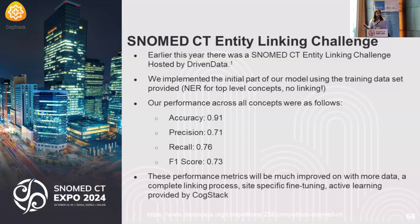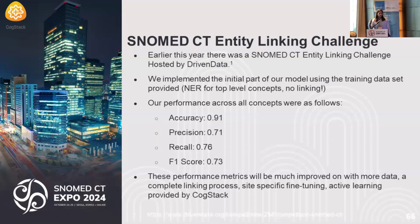We started off doing the SNOMED CT Entity Linking Challenge that was done earlier this year. We didn't have time to do the full challenge, so we just did the first part of the NER task with the small dataset that was provided. This is our performance with an F1 score of 0.073. Those numbers are quite high if you're aware of that task, but it's fair to remember that we were using the top-level concepts rather than the actual concepts. It is a nice step, and these metrics will also improve with specific fine-tuning and active learning provided by CogStack.